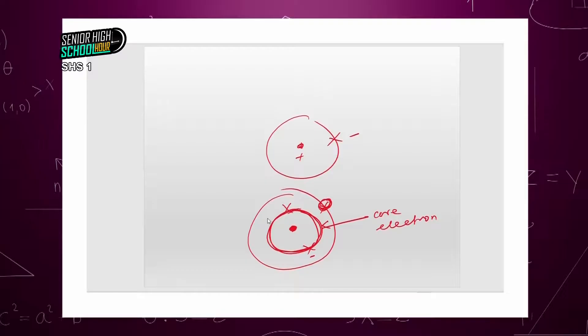We can now continue with the properties. The periodic properties — we should be able to define and explain how they vary on the periodic table from top to down, that is down a group, or from left to right across the period. There is no mathematics here — it is straightforward. You know or you don't know. You can't manipulate anything.